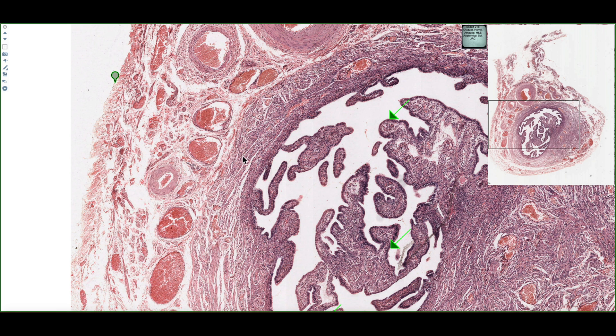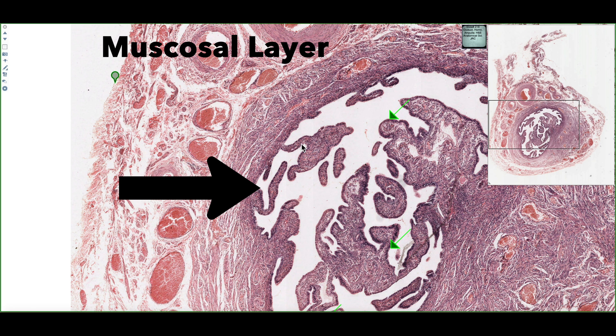Deep to the muscularis layer, we see the mucosal layer, which is characterized by all these mucosal folds that are extending into the lumen of the oviduct.